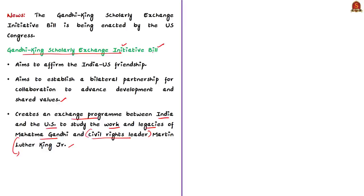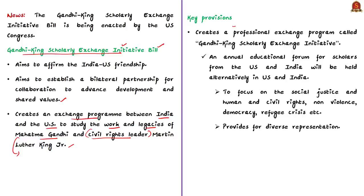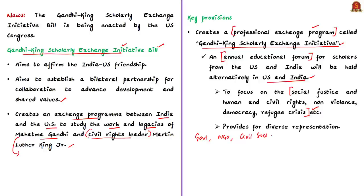One important provision is to create a professional exchange program called the Gandhi-King Scholarly Exchange Initiative. Under this initiative, there will be an annual education forum for scholars from both countries, convening alternatively in the United States and India. The forum will focus on social justice, human rights, civil rights, non-violence, democracy, and refugee crisis. It will include representatives from government, non-governmental organizations, civil society, educational organizations, and cultural groups.